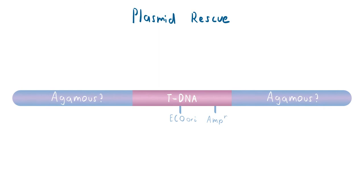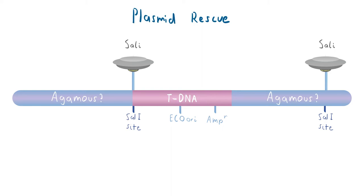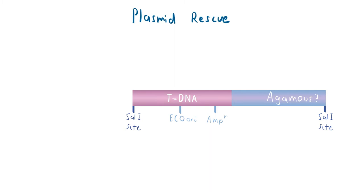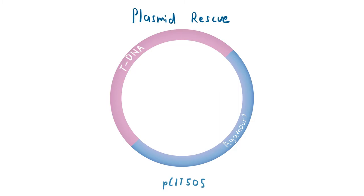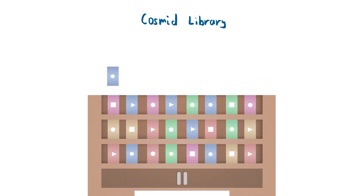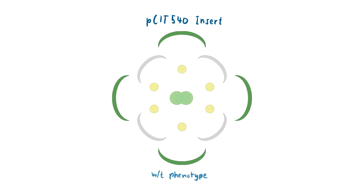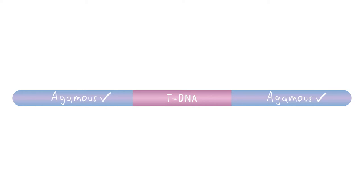Consequently, a plasmid rescue was performed. Since the T-DNA contains a ClaI restriction site, by performing a ClaI digest, we can excise a portion of the Arabidopsis DNA flanking the T-DNA, as the digest will cut the next ClaI site in the Arabidopsis genome. The resulting sequence could then circularise, and was named pKIT505. pKIT505 was then used as a molecular probe to screen a cosmid library of wild-type Arabidopsis sequences for complementarity. One cosmid, named pKIT540, was complementary to pKIT505. When this cosmid was introduced into a homozygous Ag2 mutant, it rescued the original phenotype, confirming that the region flanking the T-DNA was indeed the wild-type Agamous gene.